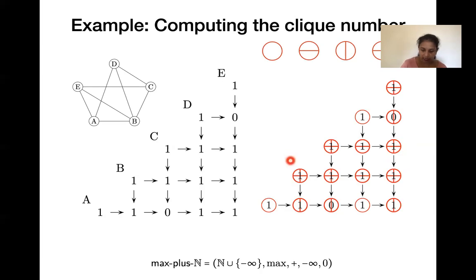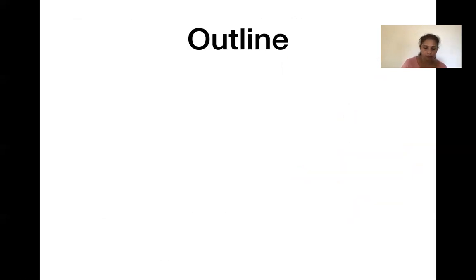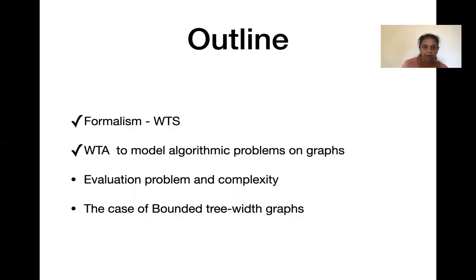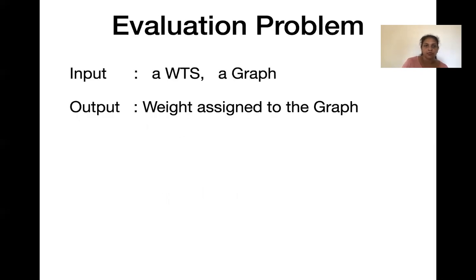The weights are one for diagonal vertices that are selected, and zero for everything else. So in one run the weight is the number of vertices selected in the subset. Taking the max over all such tilings gives the biggest such subset, which is exactly the clique number. Coming back to the outline, we have now seen the formalism of weighted tiling systems and examples. The evaluation problem: given a weighted tiling system and a graph, compute the weight assigned to the graph.